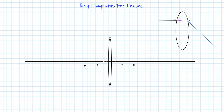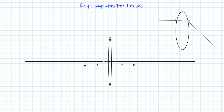Welcome to this video on ray diagrams for lenses. We're going to apply ideas from the previous video that defined what an image can be described as in terms of geometric optics and rays. We also looked at converging and diverging lenses, and different kinds of mirrors. Now we're going to learn a method other than using the lens or mirror equation to determine where an image forms and what it looks like — whether it's inverted or upright, larger or smaller.